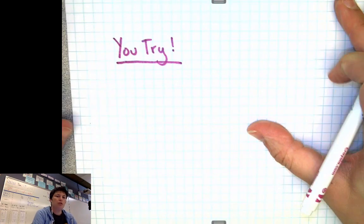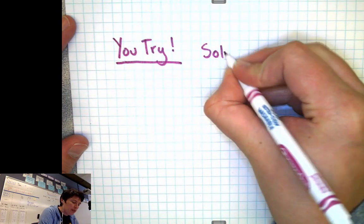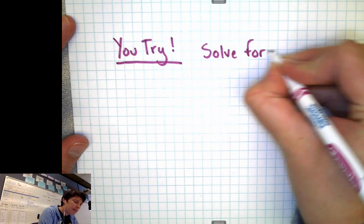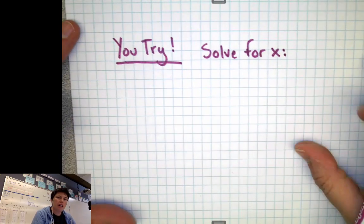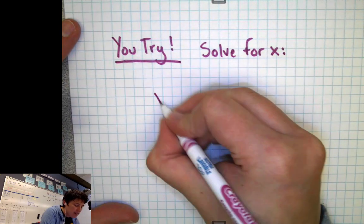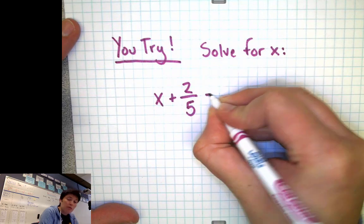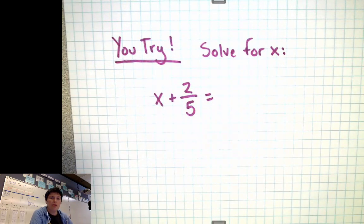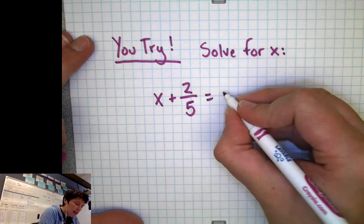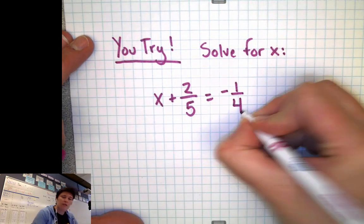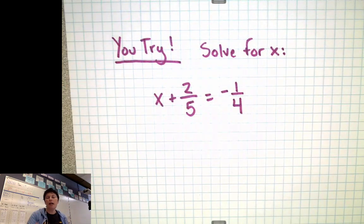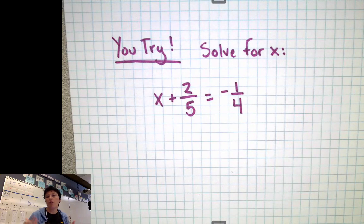So let's see how your skills are going with some of these. So here's your you try problem. I want you to solve for x. And for your problem, you're going to have x plus 2/5ths equals negative 1/4th. Go ahead right now, hit the pause button on your device and see if you can solve this completely by yourself first. And then unpause the video and see if you did it correctly.